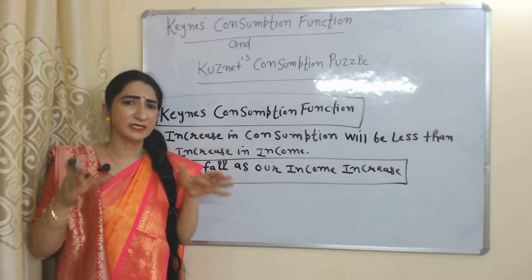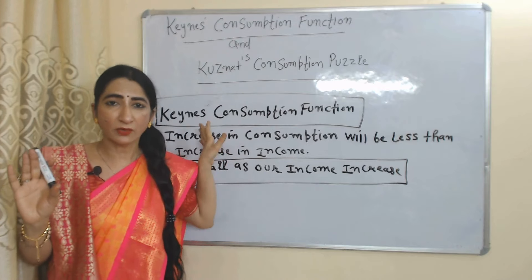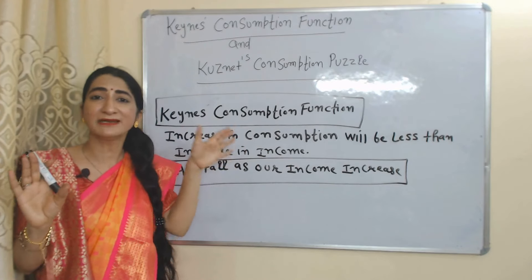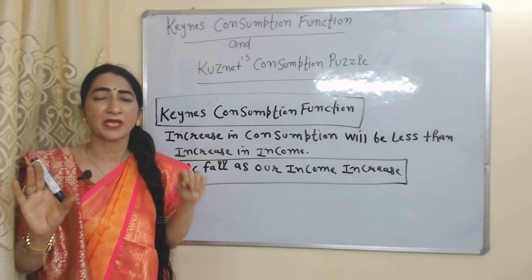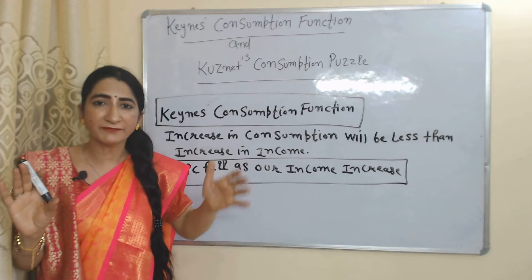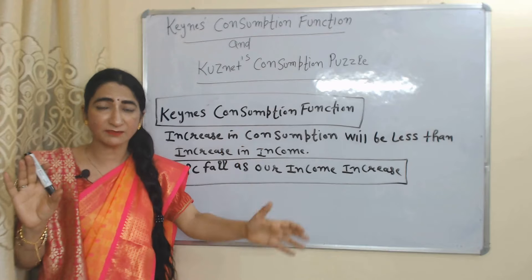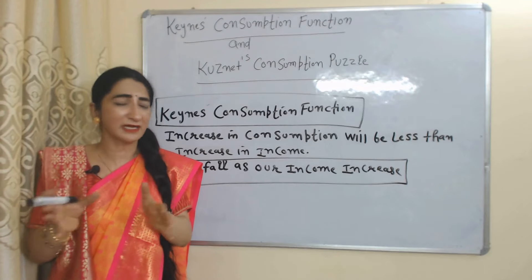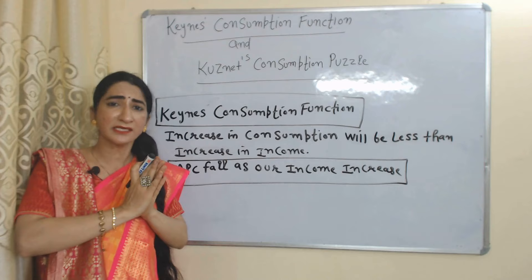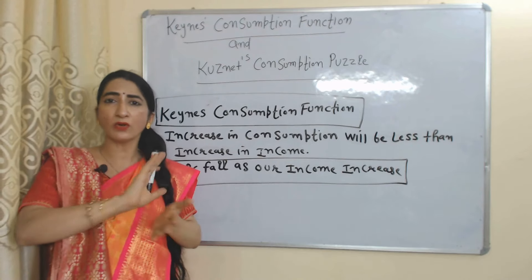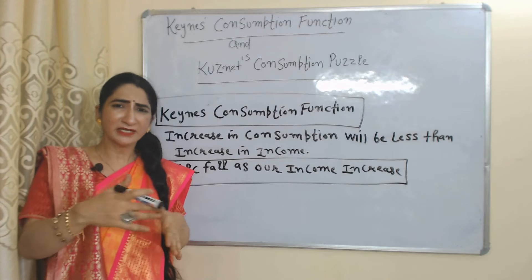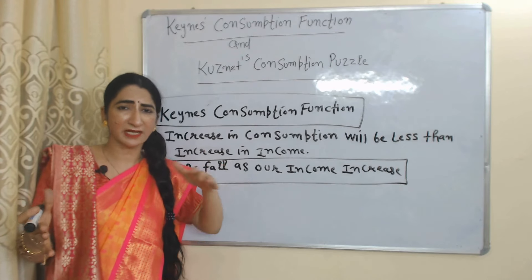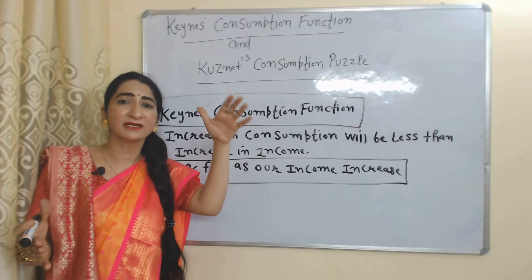As we know, when our income increases our consumption will also increase. According to Keynes' consumption function, after a certain time period, the increase in consumption will be less than the increase in income. But why? Because after a certain time period, my own needs will be satisfied — I have already purchased a mobile, laptop, car, and home.